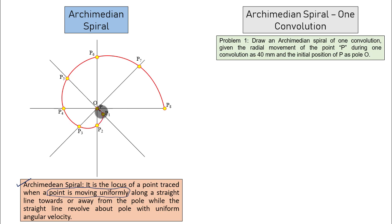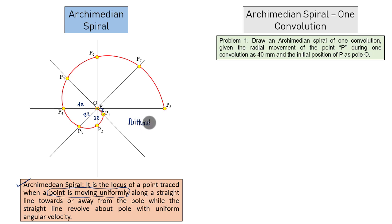Moving uniformly is an extremely important statement — it means the point has to travel equal distances in equal intervals of time. For example, if the distance between the first two points is x, then between the next two it has to be 2x, then 3x, then 4x. In a way, the movement of the point follows an arithmetic progression — either towards or away from the pole — while the straight line revolves about the pole.